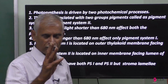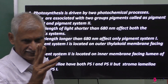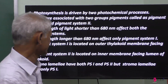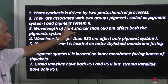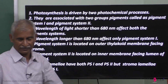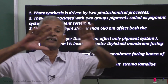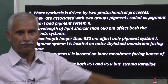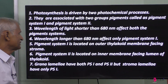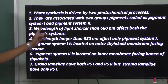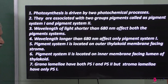The chemical process is based on light energy. There are two groups of pigments. One is called pigment system one, and another is called pigment system two.